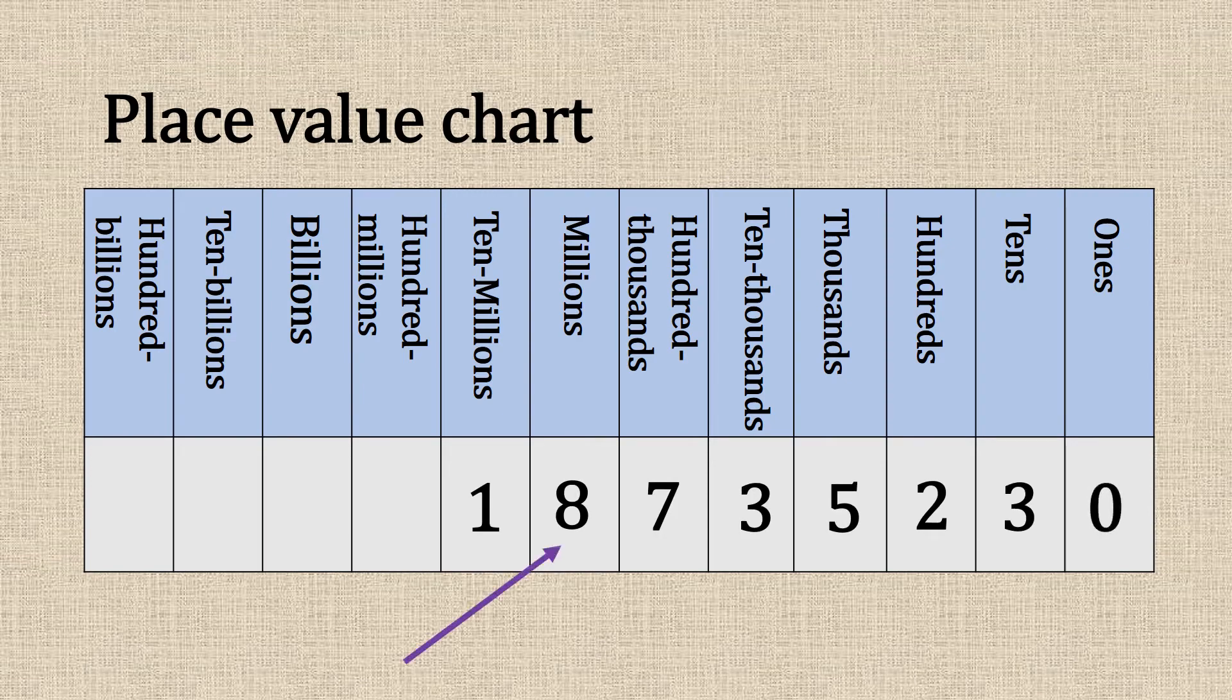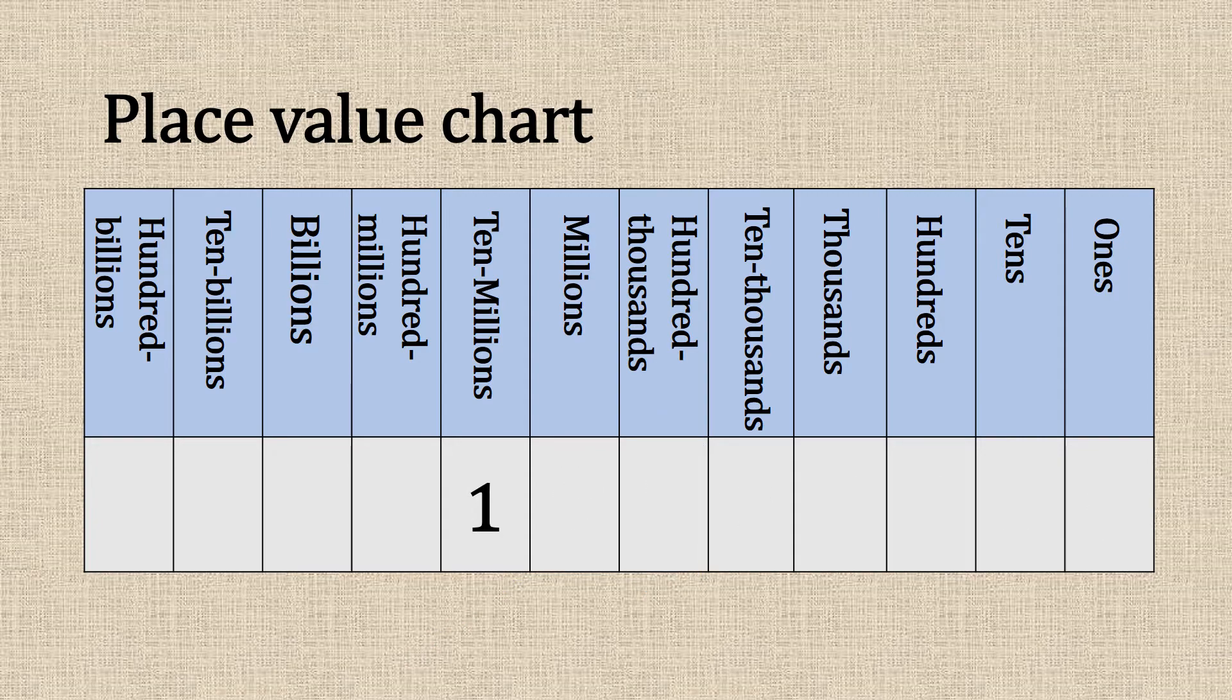Here we're going to round up to the millions. We look at the neighbor, which is a hundred thousand. It's high, so we add one. That moves up to nine, giving us 19 million.